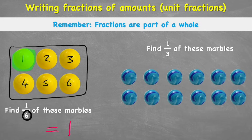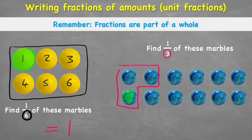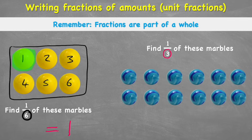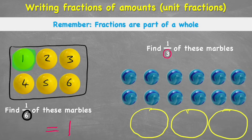Question 2 is a lot harder because we have: find 1 third of these marbles, and I have a lot more than just 3. If I had just 3, it would be very easy — I could simply colour one of them and get the answer of 1. But I have more than 3. So my first job now is to split these into 3 equal groups. I'm going to make 3 circles — 1, 2, 3. These are my sharing circles, and then I'm simply going to put these marbles inside my 3 sharing hoops.